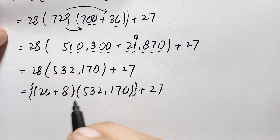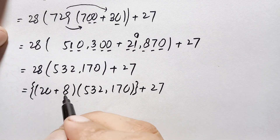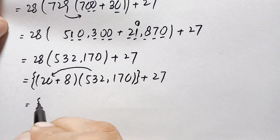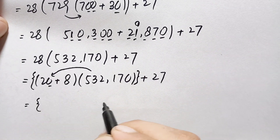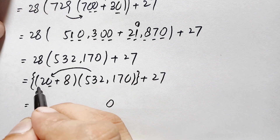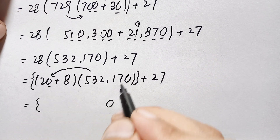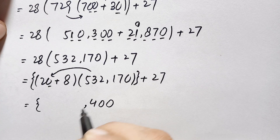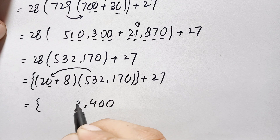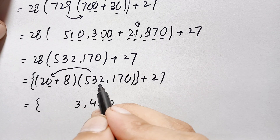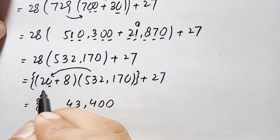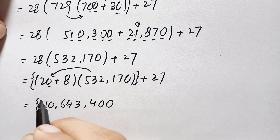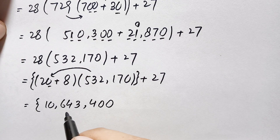Multiplying 532,170 by 20: we multiply by 2 first — 2 times 0 is 0, 2 times 7 is 14 carry 1, 2 times 1 is 2 plus 1 is 3, 2 times 2 is 4, 2 times 3 is 6, 2 times 5 is 10 — then append a zero, giving 10,643,400.